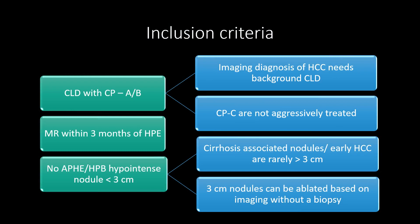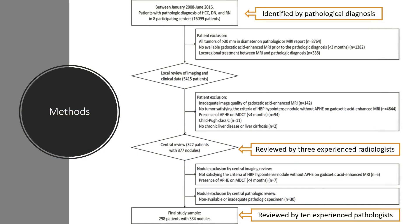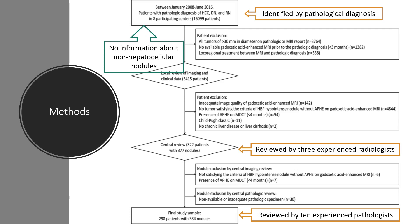The authors looked at pathologically proven HCC, dysplastic nodules, and regenerative nodules in their database. Child-Pugh score C patients were excluded, likely because they are not aggressively treated. Nodules were required to be less than 3 cm, as early HCC and dysplastic nodules are rarely larger, and sub-3 cm nodules can be directly treated with ablation based on imaging alone. From the pathology database, only regenerative nodules, dysplastic nodules, and HCC were selected. Finally, 334 nodules were reviewed by a central group of 10 pathologists — a central review that distinguishes this study from others relying on past records only.